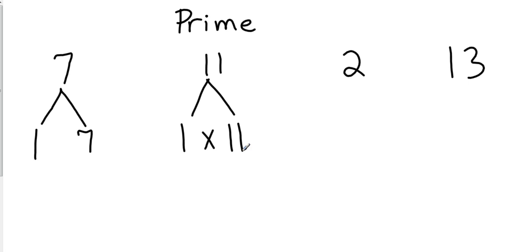That's not the case. Because two is also prime. The only way I can multiply to get two is one and two. And then thirteen is one and thirteen. So those are some examples of prime numbers.